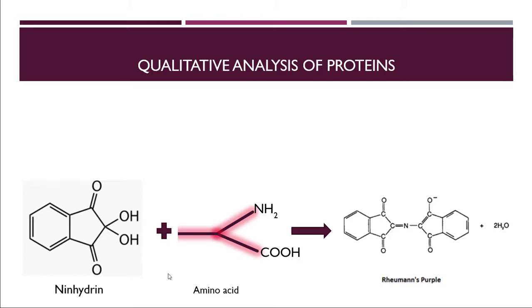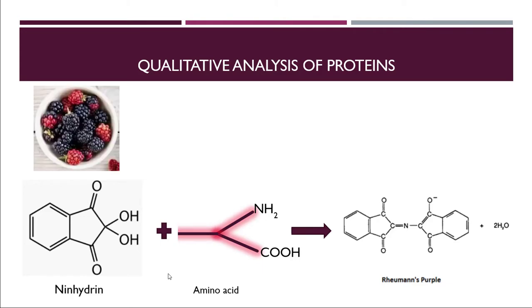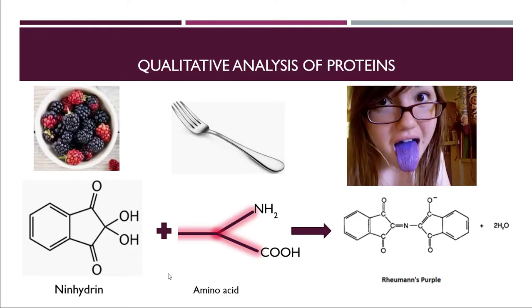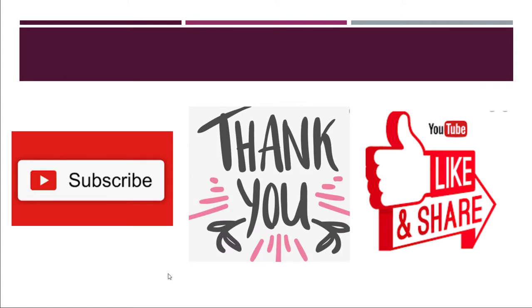Now, how do we memorize this qualitative test so we don't forget it? Just fantasize the reaction in a normal way. Think that ninhydrin is basically some kind of blueberries or blackberries, and when we take a fork and eat them, the color of our tongue changes to purple. When you visualize things like this, you will never forget this test again.